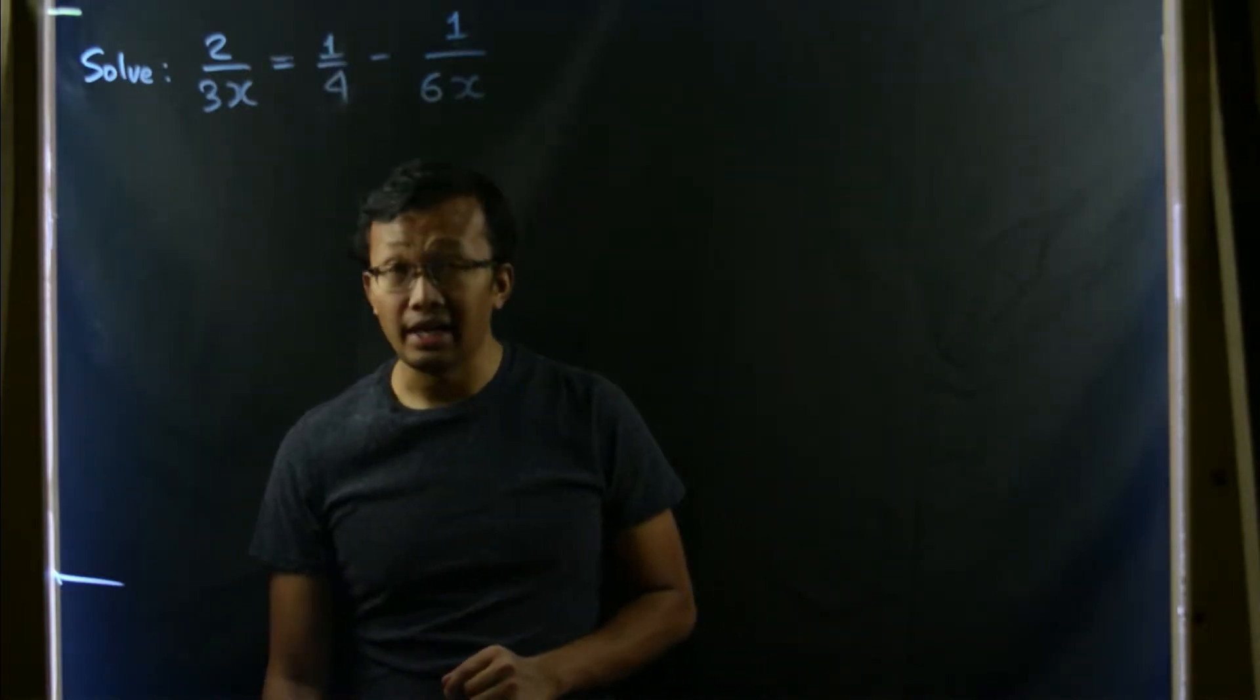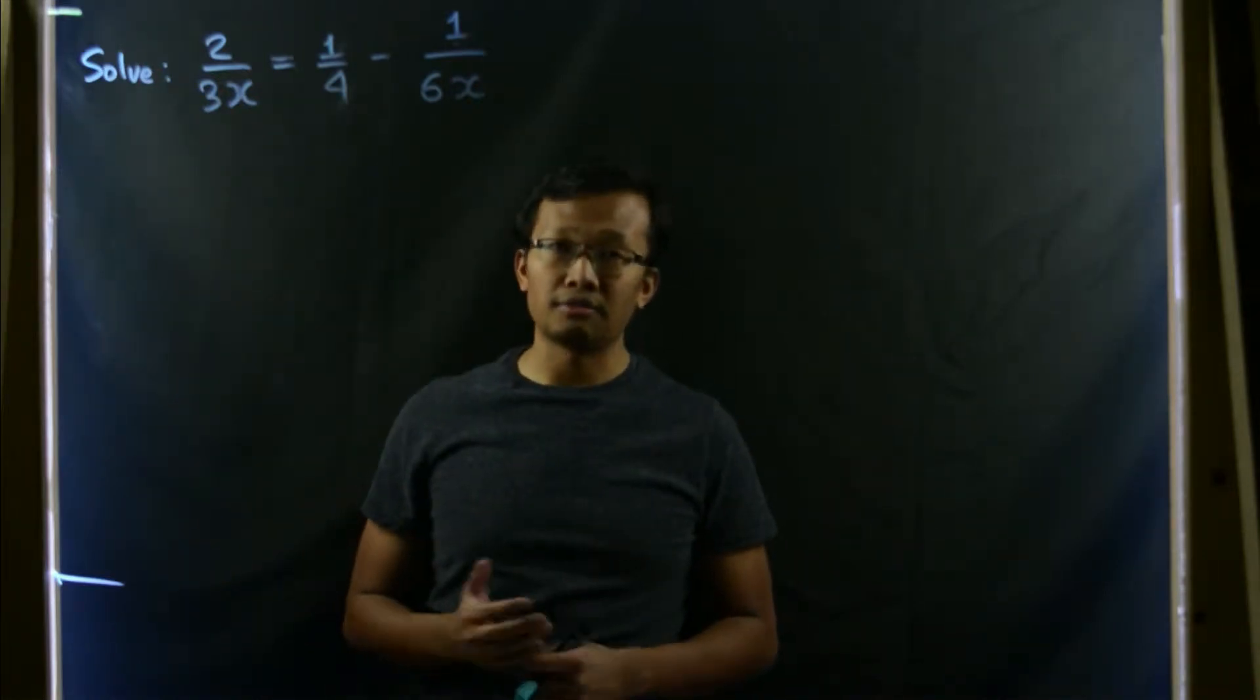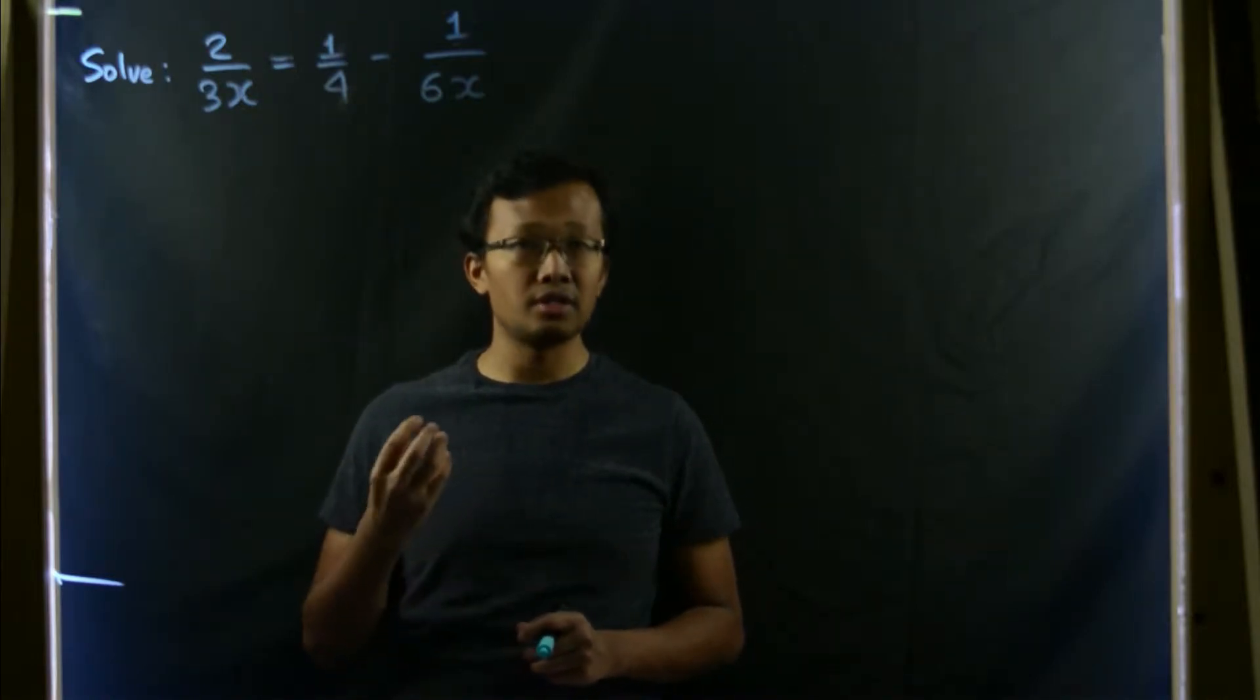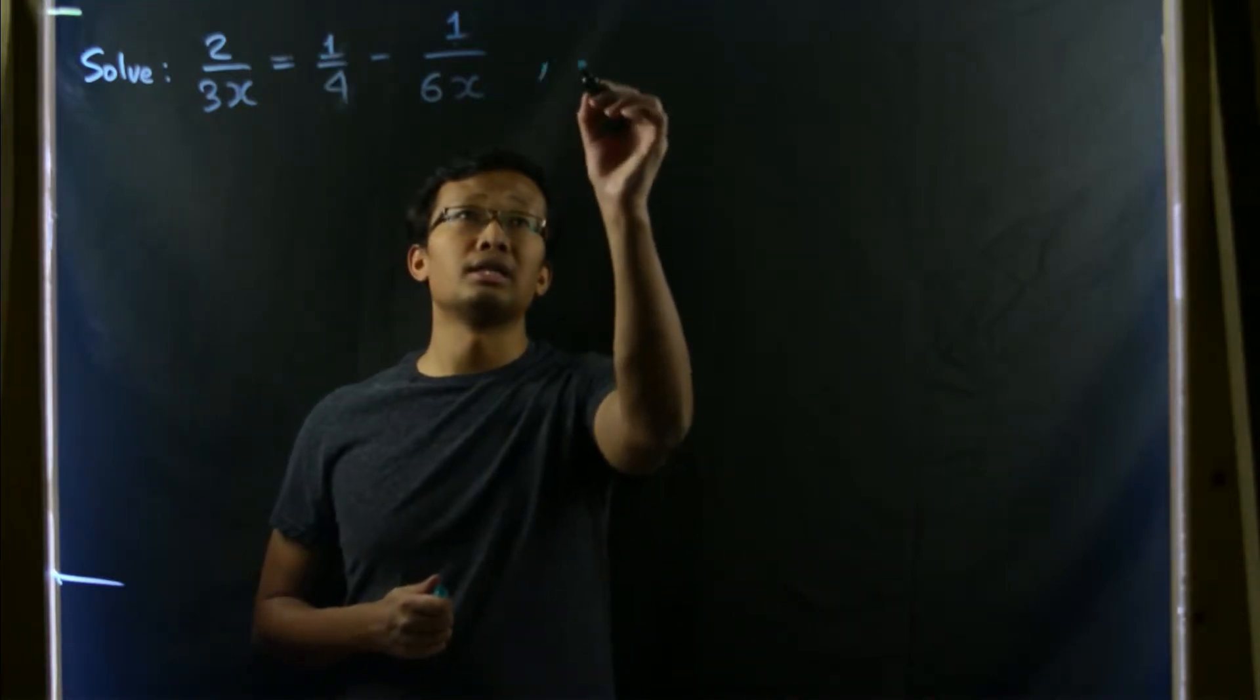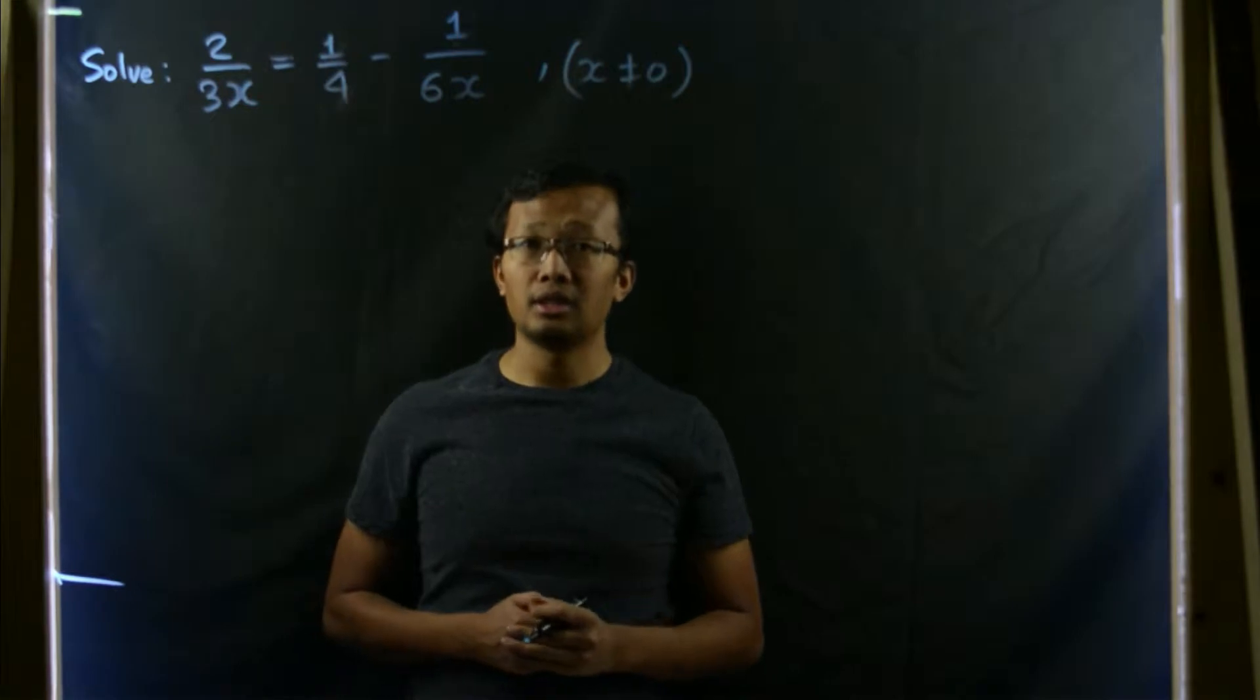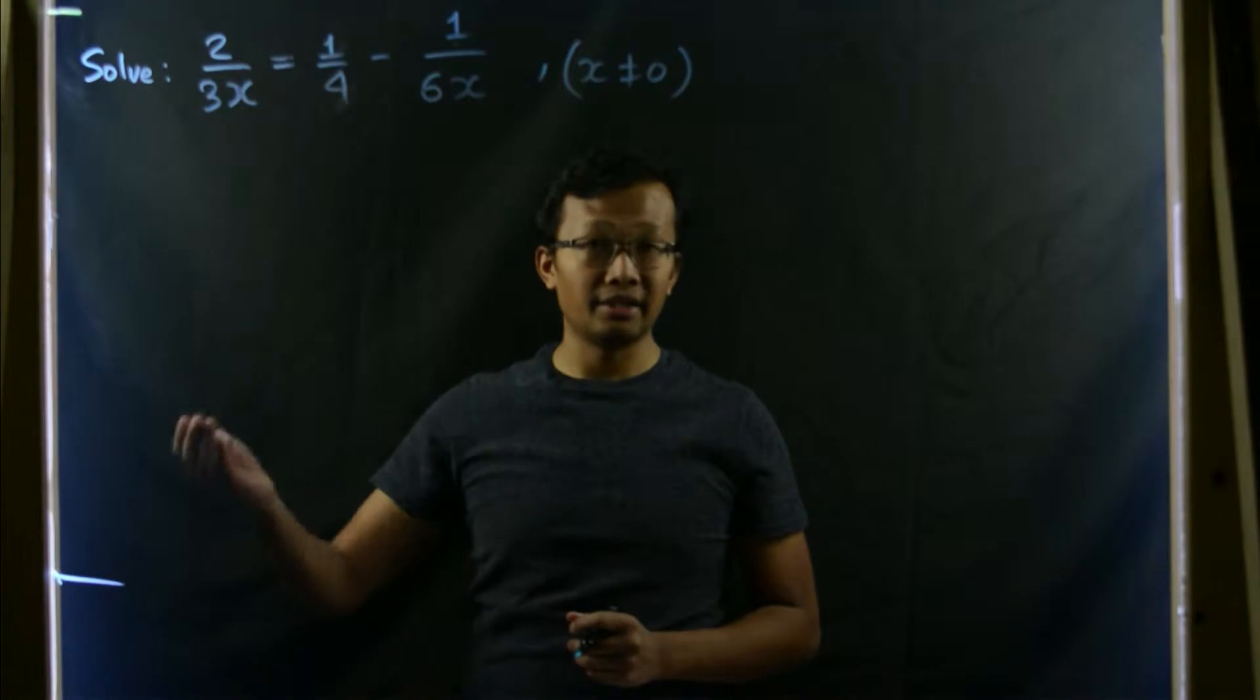As we all know, whenever x is in the denominator of a fraction, then we must be careful that we should not have 0 in the denominator. So we will always assume that this x is not equal to 0 in this situation. We are trying to avoid those values of x which makes the fraction an infinity.